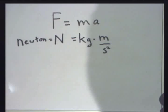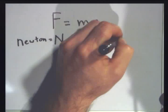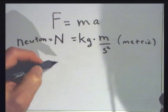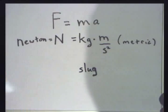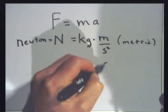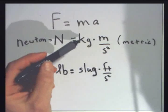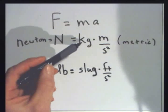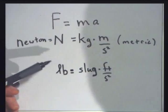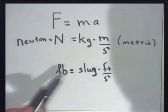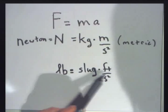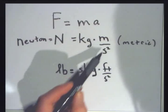A Newton is given by a capital N — kilogram meters per second squared. Now in English units, the mass of an object is called a slug. We never use slugs, but that's what it's called. And acceleration is feet per second squared. A slug foot per second squared is called a pound. So metric people talk about kilograms — they talk about mass — whereas we always talk about force, we talk about weight in pounds. A pound is a slug foot per second squared, units of mass times acceleration, just like a Newton is kilograms times meters per second squared.